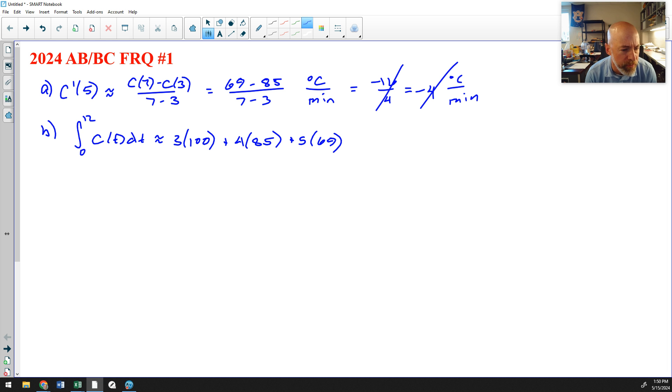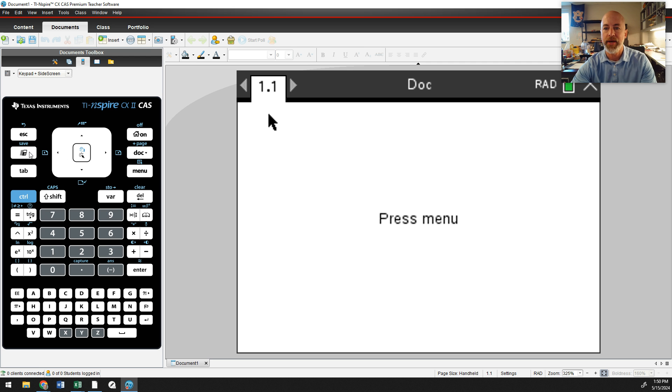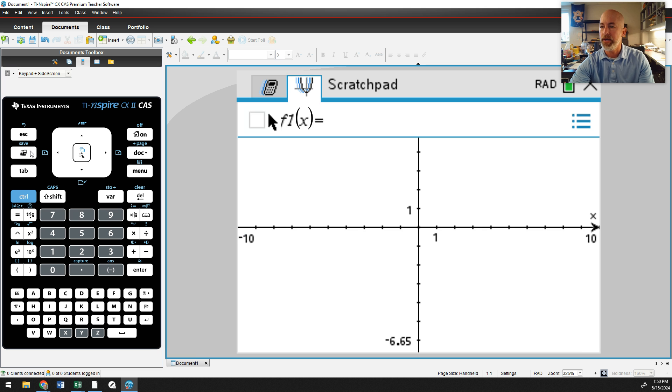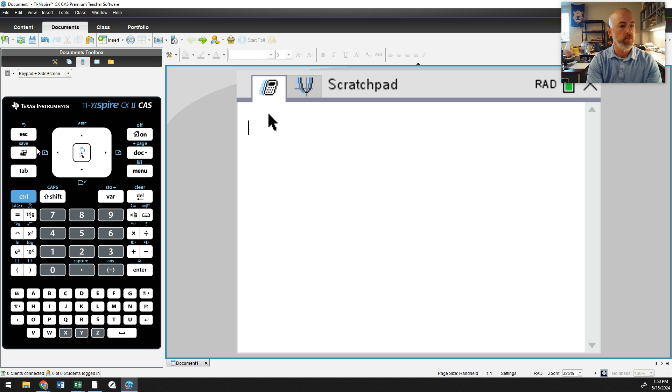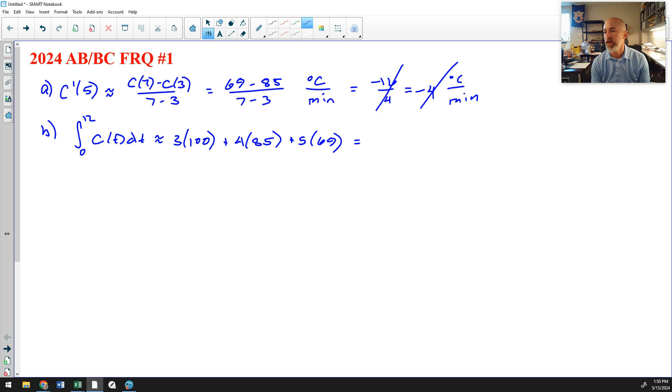Then it says to interpret the meaning of one twelfth of that antiderivative. I am, just for curiosity, going to punch that in my calculator here. So I used the TI Inspire. And so that was what? That was three times 100 plus four times 85 plus five times 69. And I'm getting 985 for that. So I'm going to go back to my work here. So I'm getting 985. Again, if you simplify that, I'm going to put a line for that just in case I fat fingered something in the calculator.